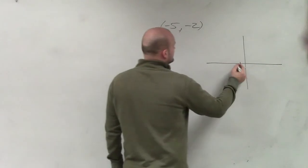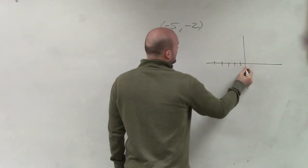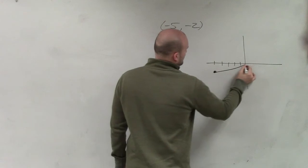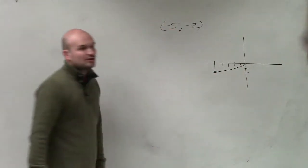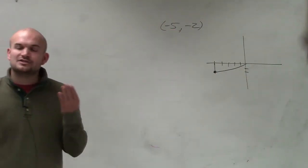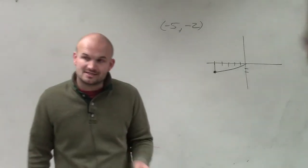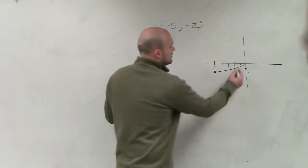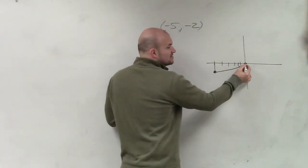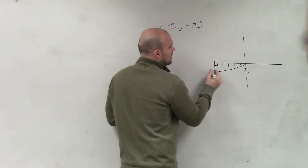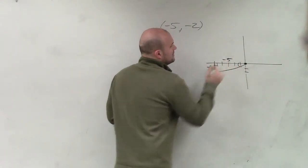Negative 5, 1, 2, 3, 4, 5, negative 2. Always remember when creating your triangle that you create a line that is going to be perpendicular to your x-axis. And that's going to create a central angle, meaning the central angle is going to be from our origin. All right? Negative 2, negative 5.